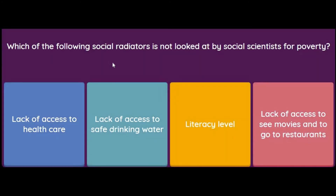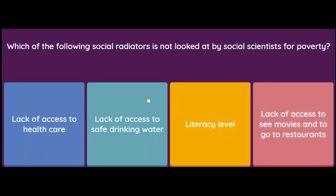Which of the following social indicators is NOT looked at by social scientists for poverty? Lack of access to healthcare, lack of access to safe drinking water, literacy level, or lack of access to see movies and go to restaurants? The answer is: lack of access to see movies and go to restaurants.